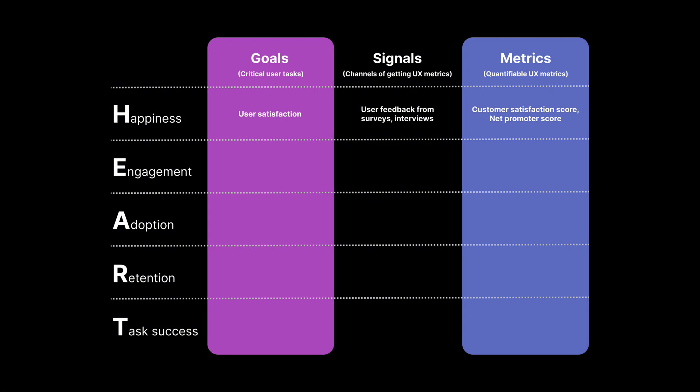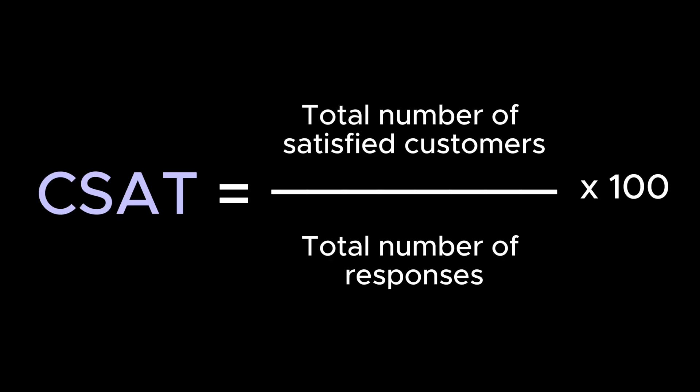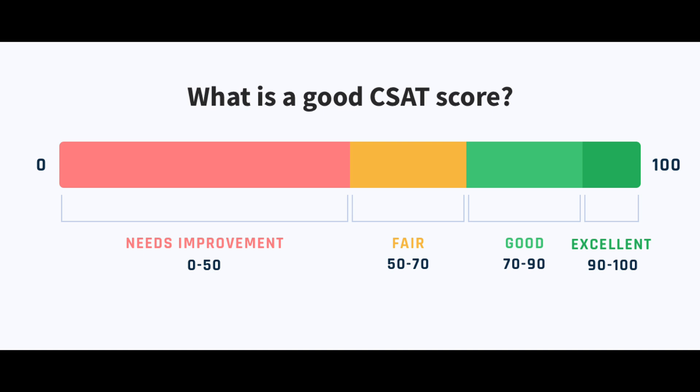Happiness measures how satisfied users are with your app. Goal: make sure users find the product helpful and easy to use. Signals: users participate in surveys, product ratings, and live in-app feedback, and provide positive feedback. Metrics: Customer Satisfaction Score and Net Promoter Score. The Customer Satisfaction Score is calculated by dividing the total number of satisfied customers by the total number of responses and multiplying by 100. A score above 70 means users are satisfied, 50–70 is okay, and below 50 means there is room for improvement.